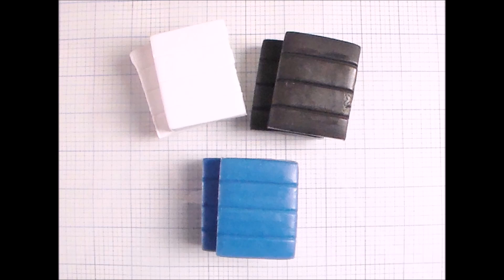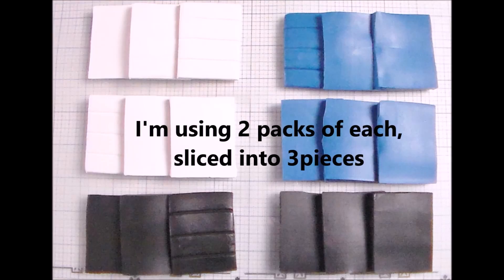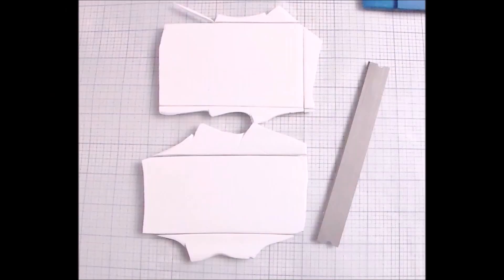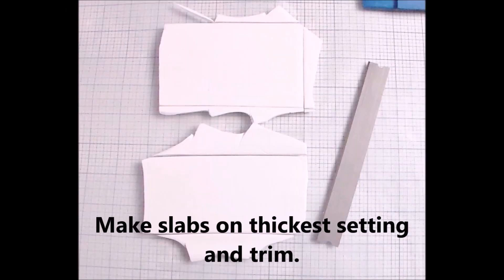So choose one color and get your black and white. I'm using two packages of each and I put them through the machine like this. I just roll over them a little bit after they're cut into three pieces and I get sheets quickly.